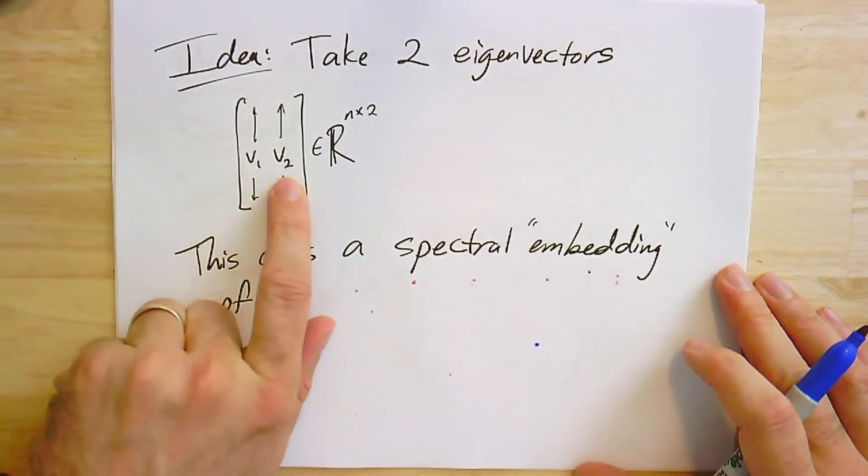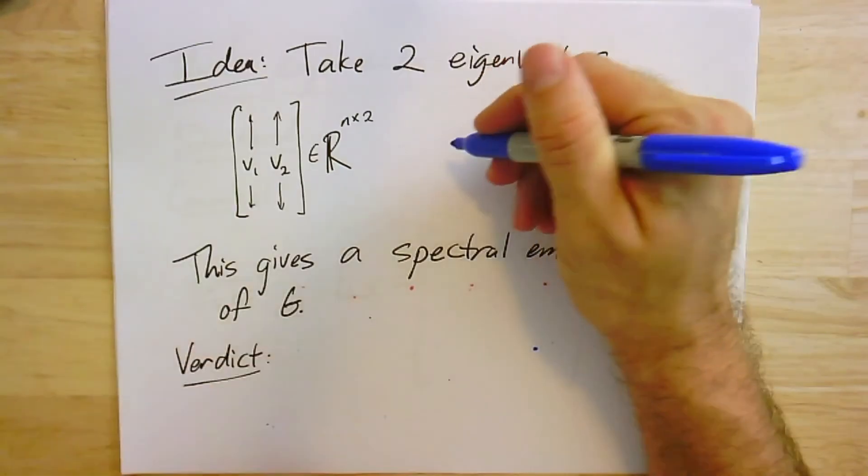There's something else you can do: you could take two eigenvectors, V₁ and V₂. If I think of it as a function, it's like taking my vertices to the plane. I have two real numbers for every vertex, so it puts the points in the plane. This gives what's called a spectral embedding. Although really, let's be careful—let's call it a drawing.